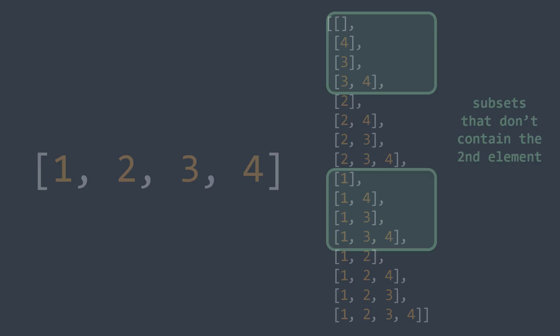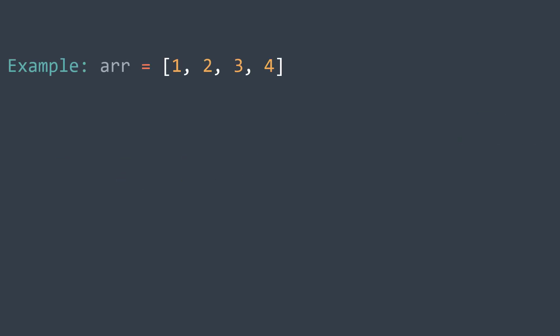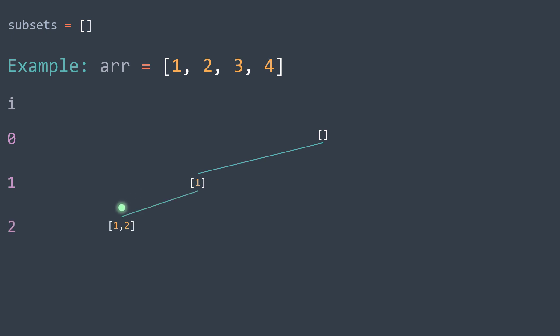You'll better understand with this example. We have the array [1, 2, 3, 4] and we want to generate all its subsets. For the first element, we can either take it or leave it. Let's see the case where we take it — you can see that we inserted it in the subset that we're building. Now for the second element, we start by taking it; third element, same thing; and last element, same thing.